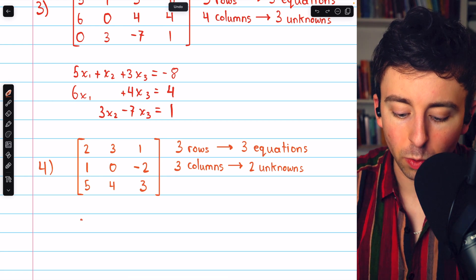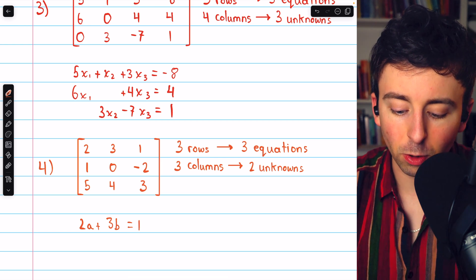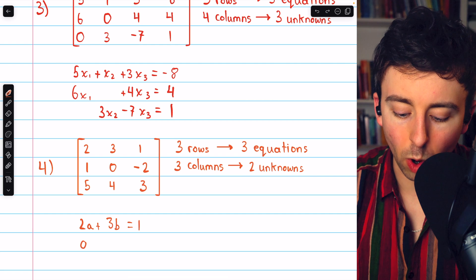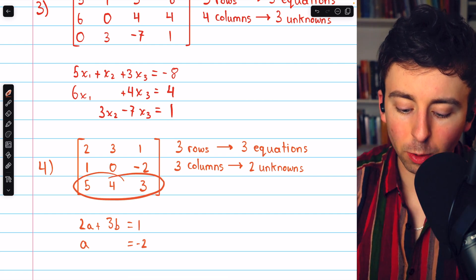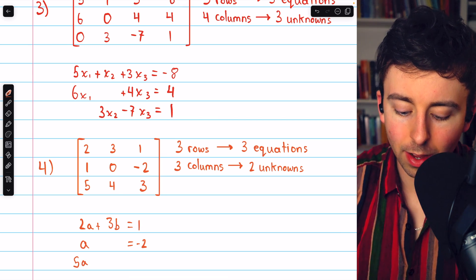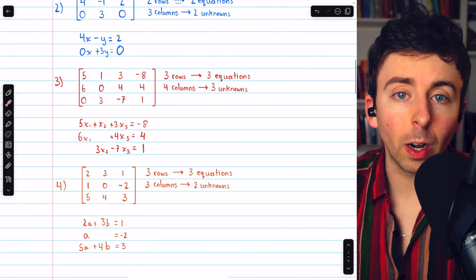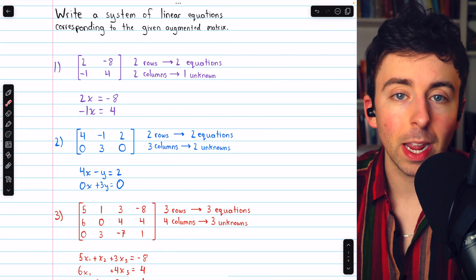Then, from the first row, we have that 2A plus 3B equals 1. Remember, the constants are always on the right side. From the second row, we have that 1A, we'll leave blank space, just equals negative 2. And from the final row, we have 5A plus 4B equals 3. And that's how to write the system of linear equations that corresponds to an augmented matrix.